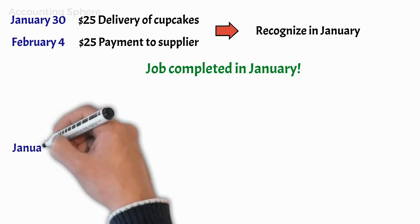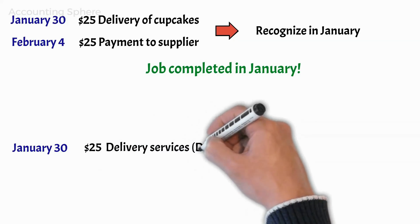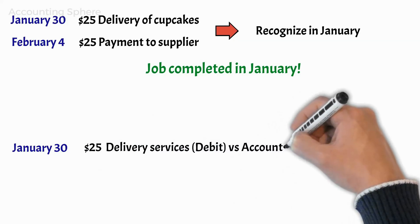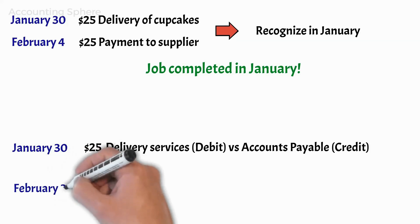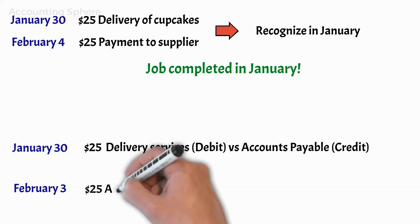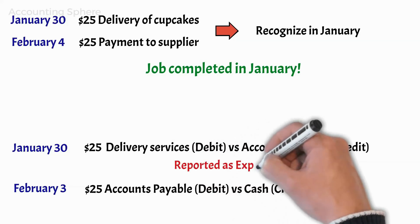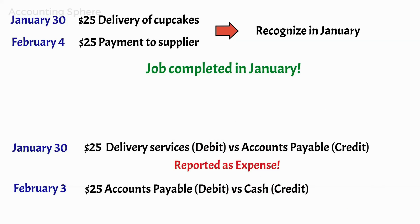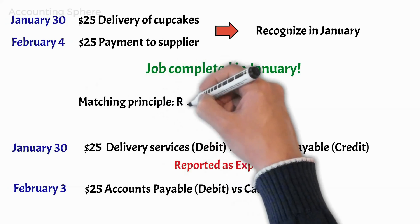In January, Michael will record $25 in accounts payable for the incurred but still not paid cost for delivery, and will balance it with an increase in costs by the same amount. In February, Michael will record an offsetting entry in accounts payable and a decrease in cash. Even though the money will not be paid out until February 3, the $25 charge is recorded as a January expense. This is known as another basic accounting principle — the matching principle — meaning the recording of expenses with related revenues.